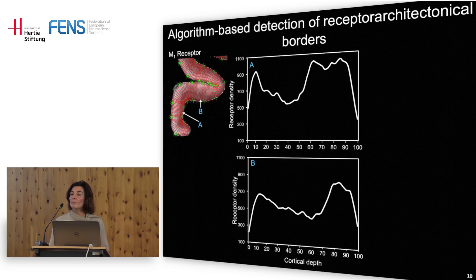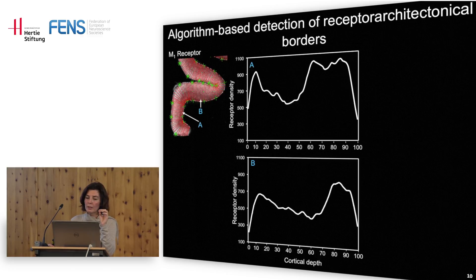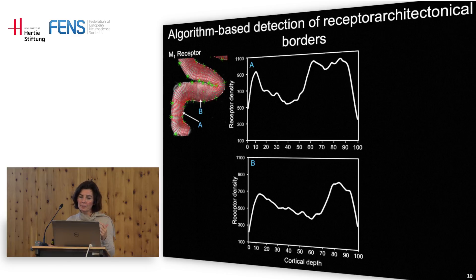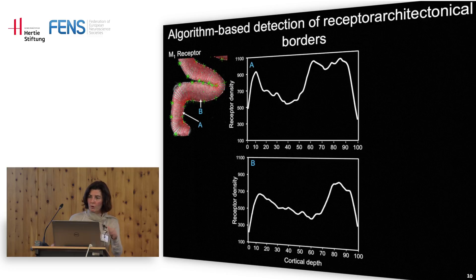How do you label or detect the receptors? We use fresh, non-fixed, shock-frozen brains. We section them and incubate these unfixed sections with ligands that are specifically recognized by the receptor you want to examine — ligands that have been radioactively labeled. Then you expose these radioactively labeled sections against a film sensitive to radioactivity, and you can transform the grey values: dark grey codes for higher receptor densities and paler grey codes for lower receptor densities.